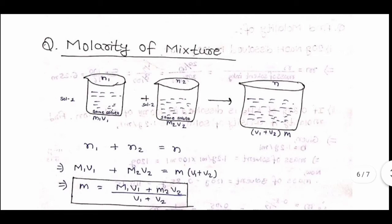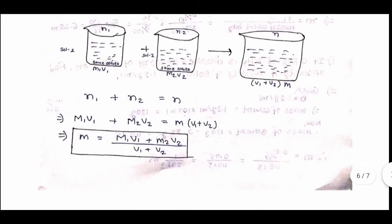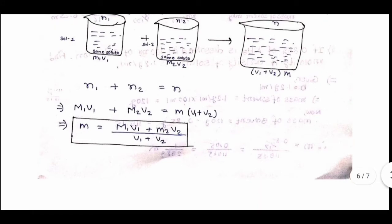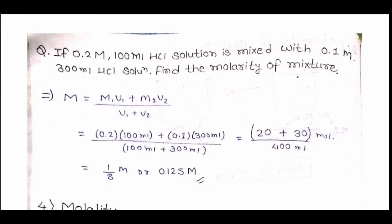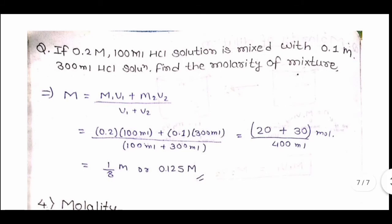Molarity of mixture: if two solutions are mixed, M1V1 + M2V2 = M(V1 + V2), so M = (M1V1 + M2V2) / (V1 + V2). Question: 0.2 M, 100 mL HNO3 is mixed with 0.1 M, 300 mL HNO3. Molarity of mixture = (0.2×100 + 0.1×300) / (100+300) = (20+30)/400 = 50/400 = 0.125 M.